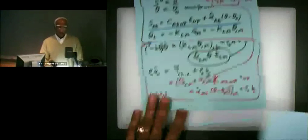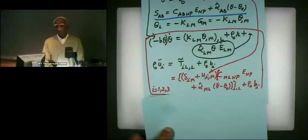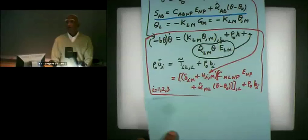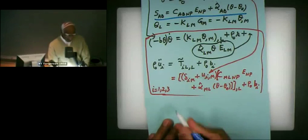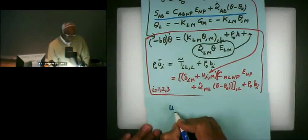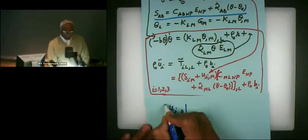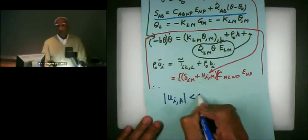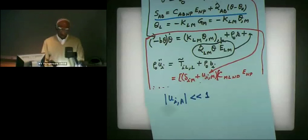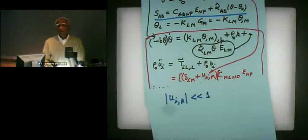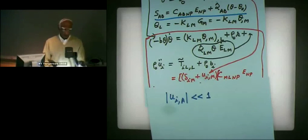We also need initial conditions and boundary conditions. Now, if you make an additional assumption — that U_i comma A is much, much less than one, by that I mean like one or two percent. Remember, this is length over length, so it's centimeter over centimeter — a non-dimensional quantity. By that I mean squares are negligible compared to the quantity itself.